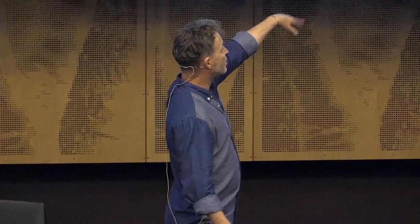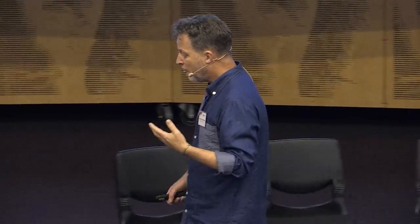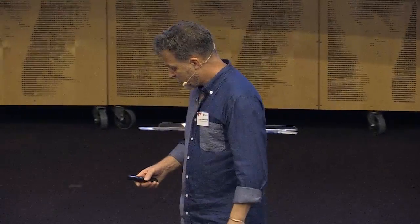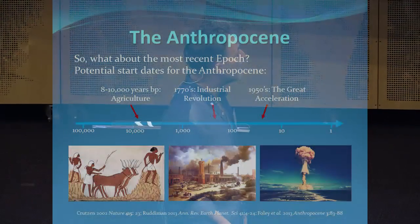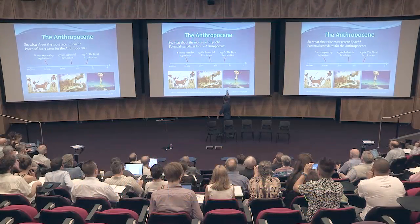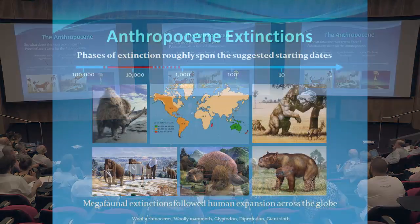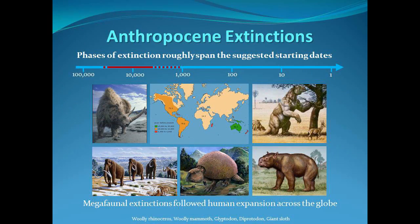The two big ones we've already heard about are the extinction of the dinosaurs and the great permian extinctions. It occurred to me that maybe we could think about the controversy about dating the start of the Anthropocene by looking at organisms. We've got three main contenders, plus the paleoanthropocene off towards the left: the beginning of agriculture, the industrial revolution, and the great acceleration.